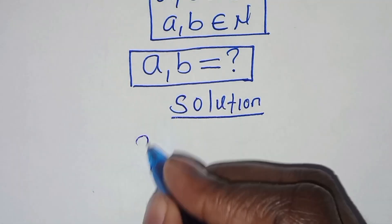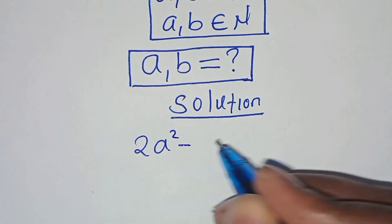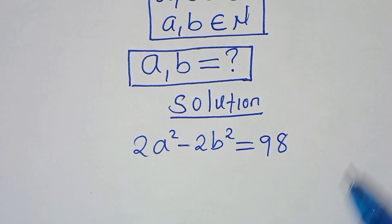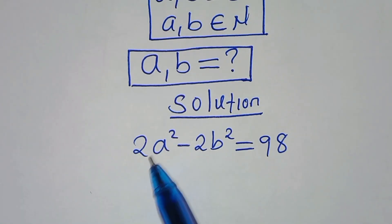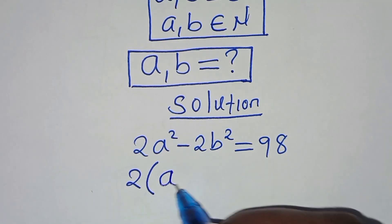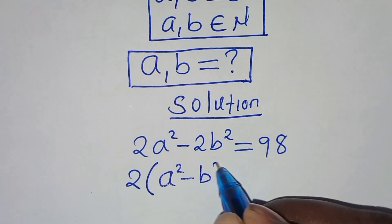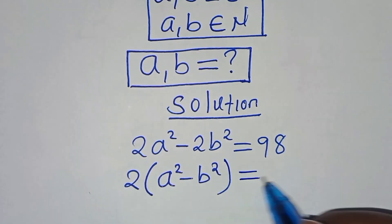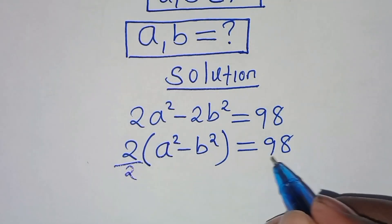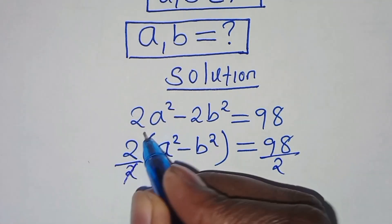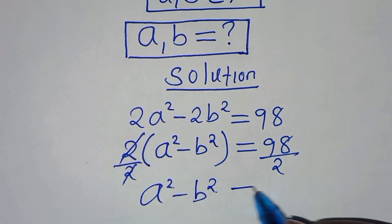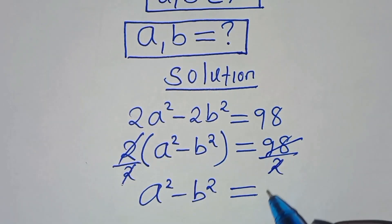We have 2a² minus 2b² equal to 98. Since 2 is common, we factor out 2, giving us 2(a² minus b²) = 98. Dividing both sides by 2, we now have a² minus b² equal to 49.